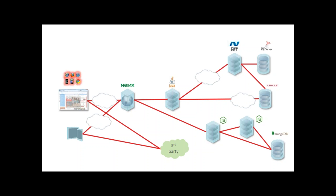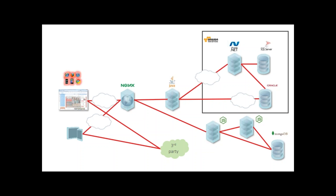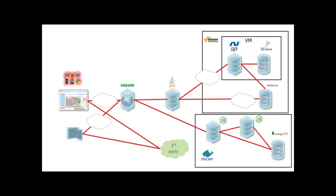We have internet clouds here — network connections not under our control. Some parts are within our data center and others we cannot control completely. We also want a modern setup on AWS because it's convenient. Within AWS we have a VM running, and within our data center we're experimenting with new technologies set up inside Docker containers.